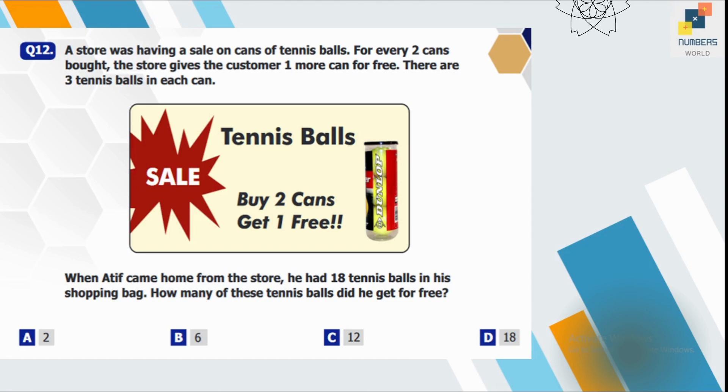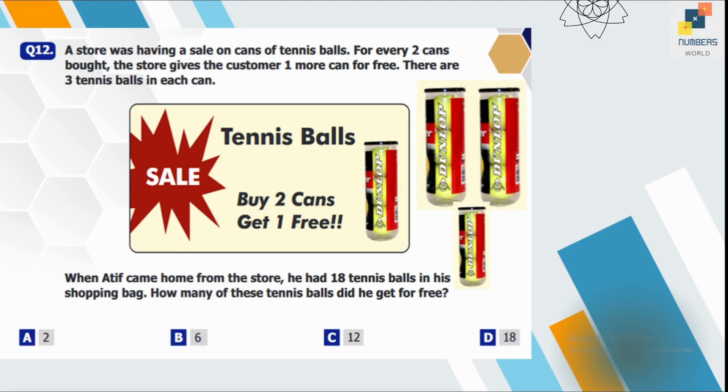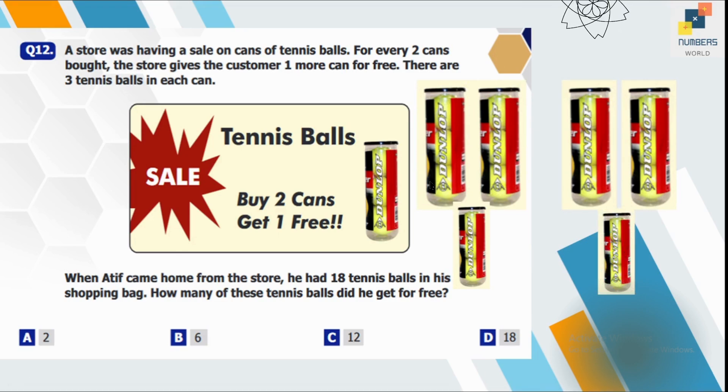Question number 12. A store was having a sale on cans of tennis balls for every two cans bought. The store gives the customer one more can for free. There are three tennis balls in each can. When Atif came home from the store, he had 18 tennis balls in his shopping bag. How many of these tennis balls did he get for free? So if he bought two cans, he got third can free. Similarly, if he buys two more, he will get the sixth one free. So we can see that the free balls are in the smaller cans. So three plus three is six. So he bought basically 12 balls and got six balls free out of 18.